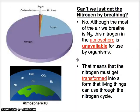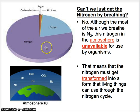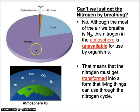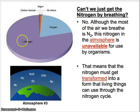Can't we just get the nitrogen by breathing? So much of our atmosphere is nitrogen — it takes up way more space than oxygen, which we all know we need to live. Unfortunately, we can't just breathe in nitrogen because the way nitrogen exists in the atmosphere is in a form that our cells can't use. We need the help of bacteria and plants to get the nitrogen that we need in our cells.